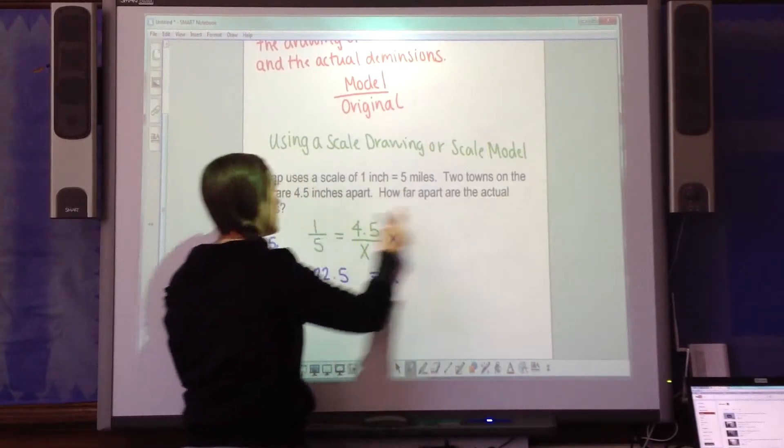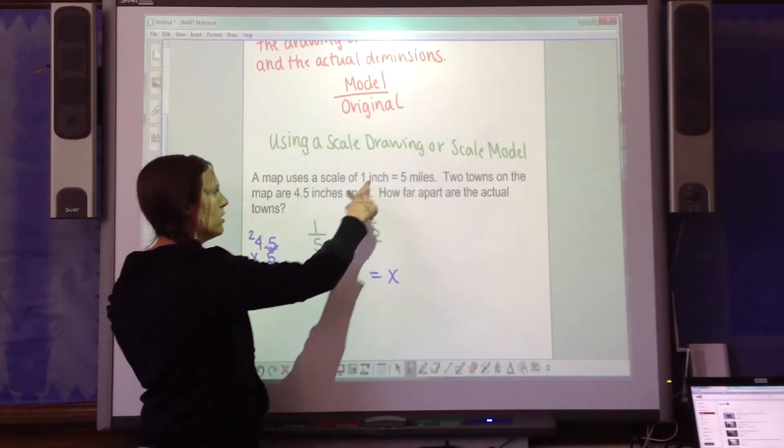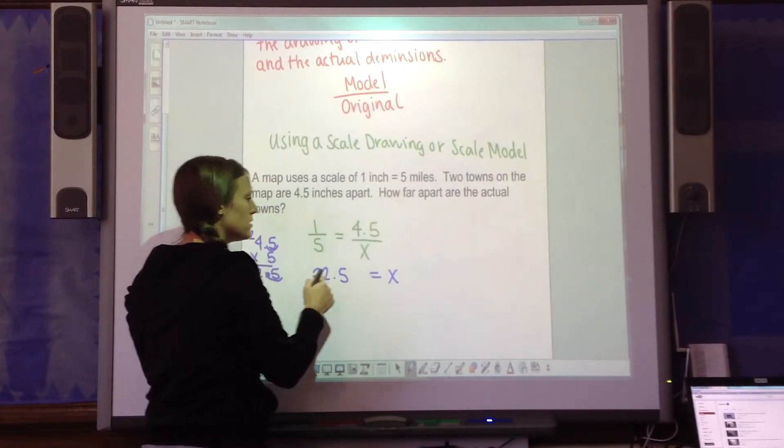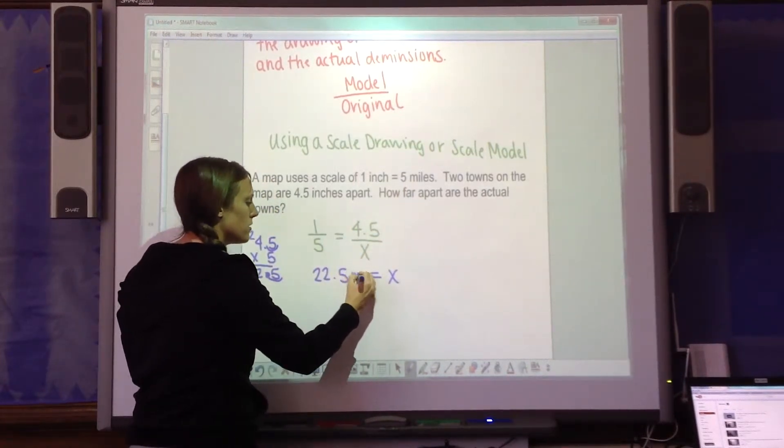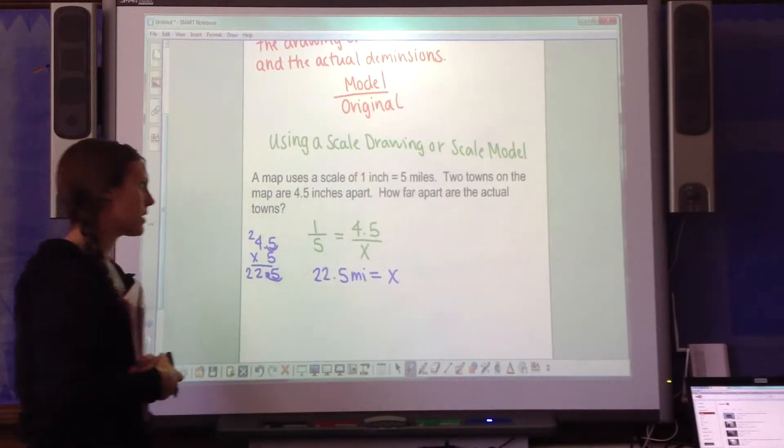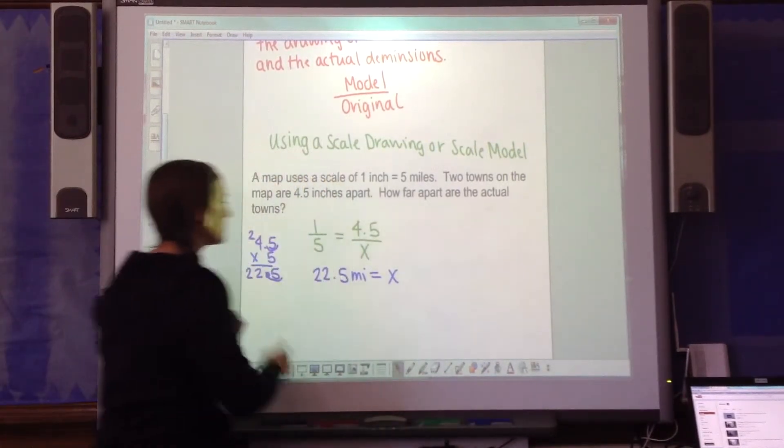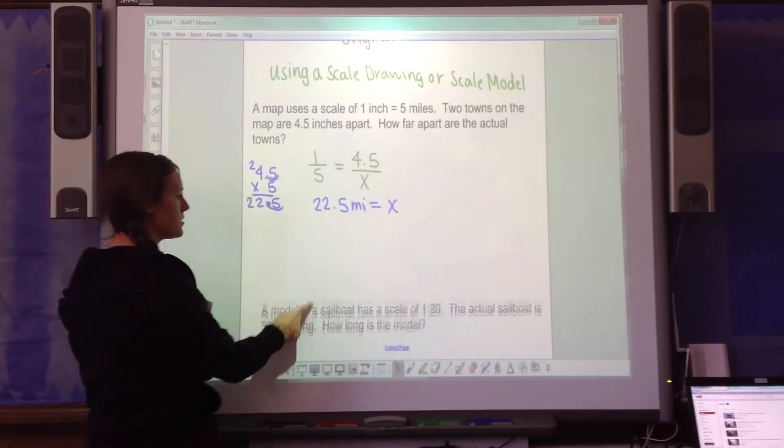I just have to figure out what measurement goes here. I want to know how far apart are the actual towns. Well, 1 inch equals 5 miles. So 4.5 inches equals 22.5 miles.